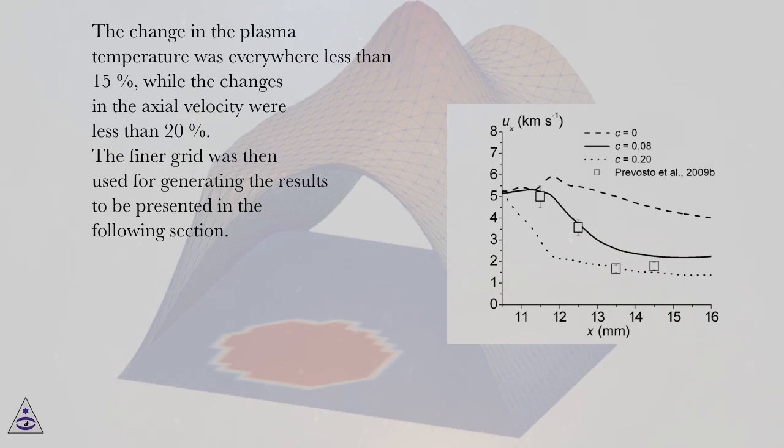The change in the plasma temperature was everywhere less than 15%, while the changes in the axial velocity were less than 20%. The finer grid was then used for generating the results to be presented in the following section.